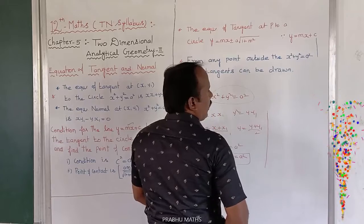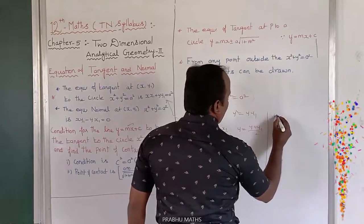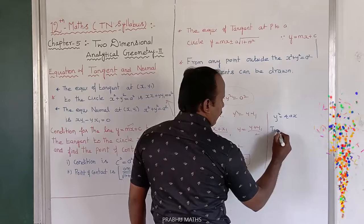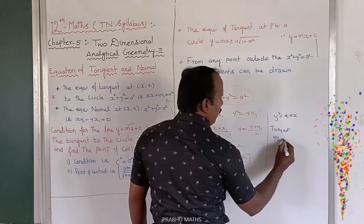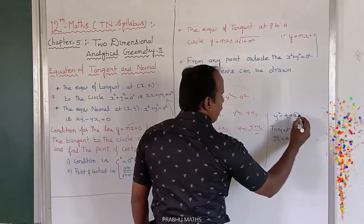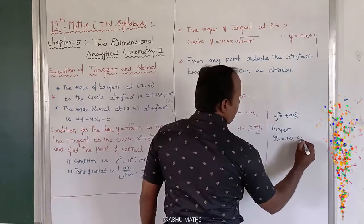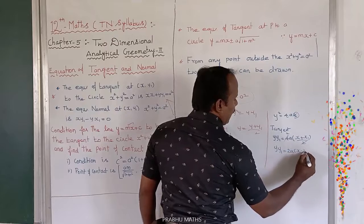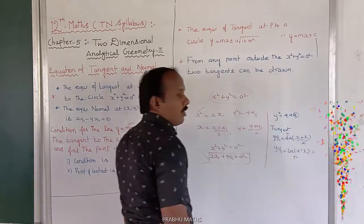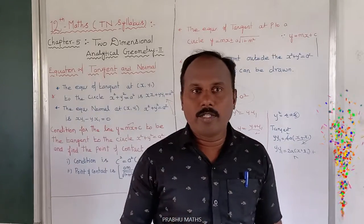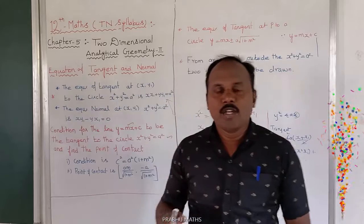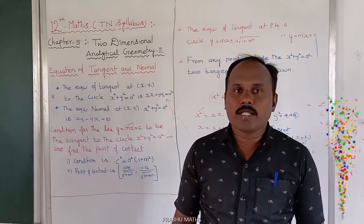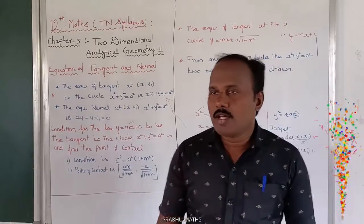For example, consider the curve y² = 4ax. To find the tangent equation, replace y² by yy1, giving yy1 = 4a × (x + x1)/2. The 2 cancels, so the tangent equation becomes yy1 = 2a(x + x1). This follows the rule: x² → xx1, y² → yy1, x → (x + x1)/2, y → (y + y1)/2.